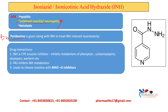Next is drug interaction. Remember, Isoniazid is a potent drug inhibitor — it inhibits the metabolism of co-administered drugs. Para-aminosalicylic acid (PAS) is the drug which inhibits Isoniazid metabolism. Isoniazid leads to cheese reaction with MAO-A inhibitors — remember it is MAO-A and not MAO-B. MAO-A inhibitors are antidepressant agents, while MAO-B inhibitors are used in Parkinsonism.